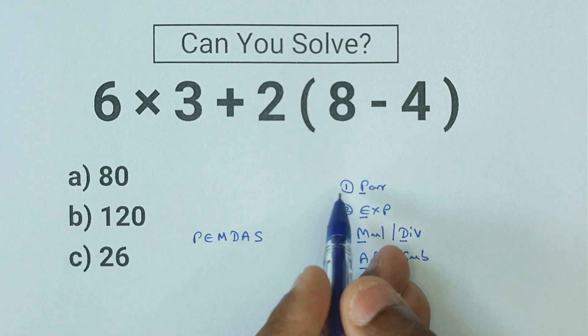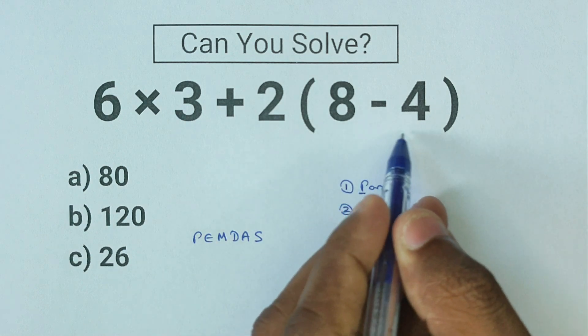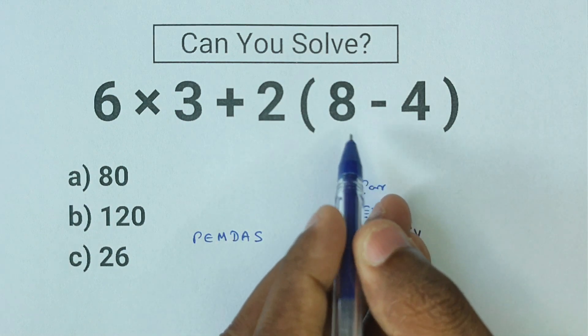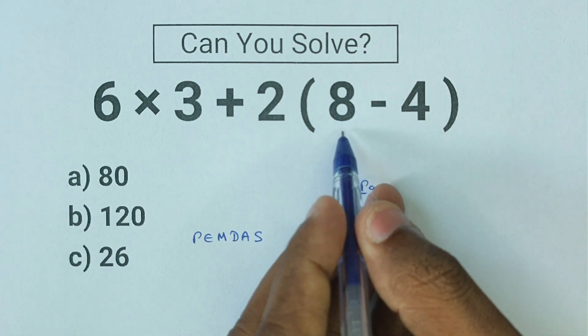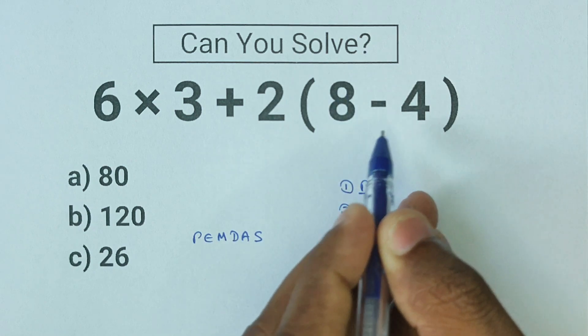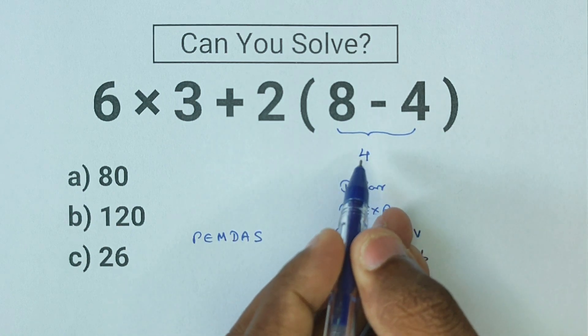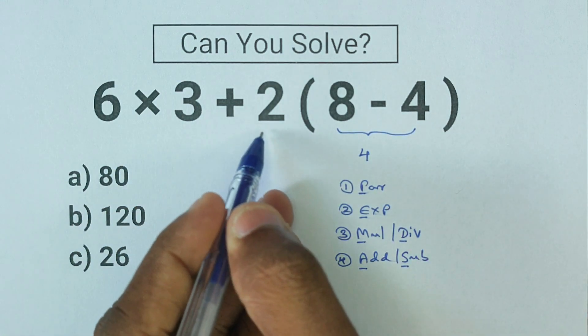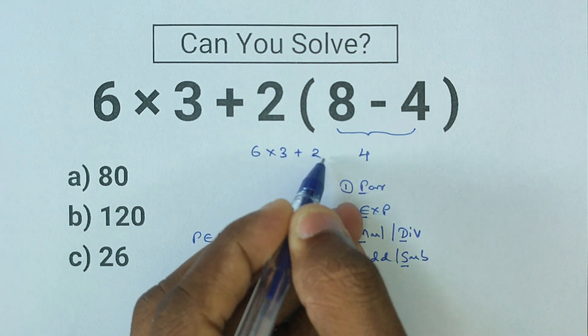To solve this expression, our first step is parenthesis. Here we have parenthesis in our problem, so we have to solve what's inside first. We have 8 - 4, and we know 8 - 4 equals 4. The rest of our expression stays the same. Parenthesis mean multiplication, so we multiply.